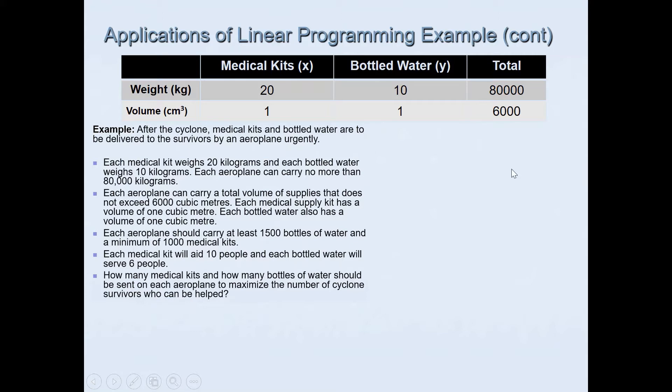You must define the variables. In this case, we'll let X be the number of medical kits and Y be the number of bottled water. What I have done here is using these variables, X is the medical kits and bottled water is Y. Using the information that's already given, I have filled in this table. We had the weight restriction and the maximum capacity was 80,000 kilograms. And then we had the volume restriction on the aircraft and the volume was no more than 6,000 cubic meters.